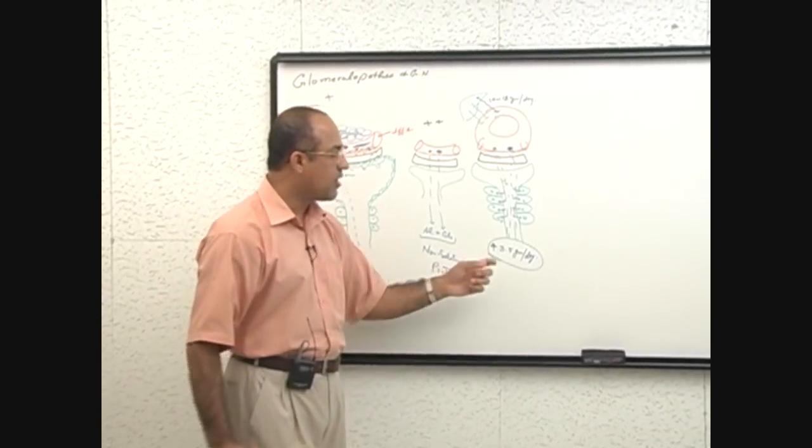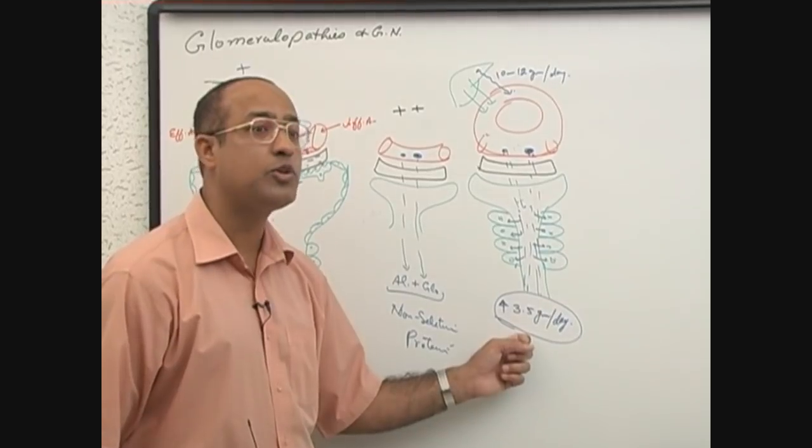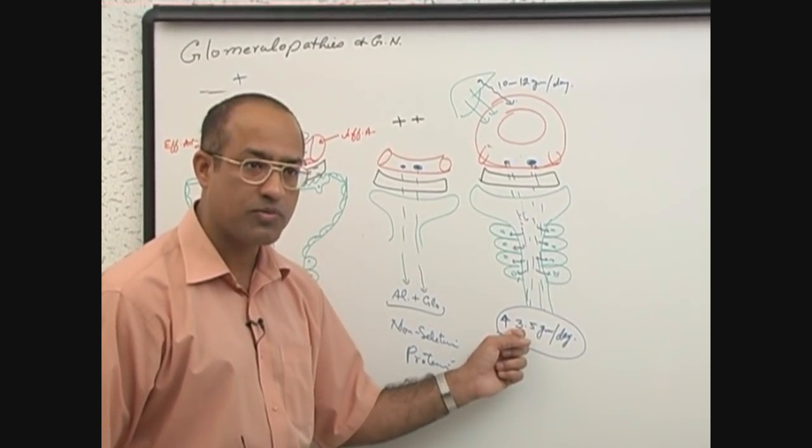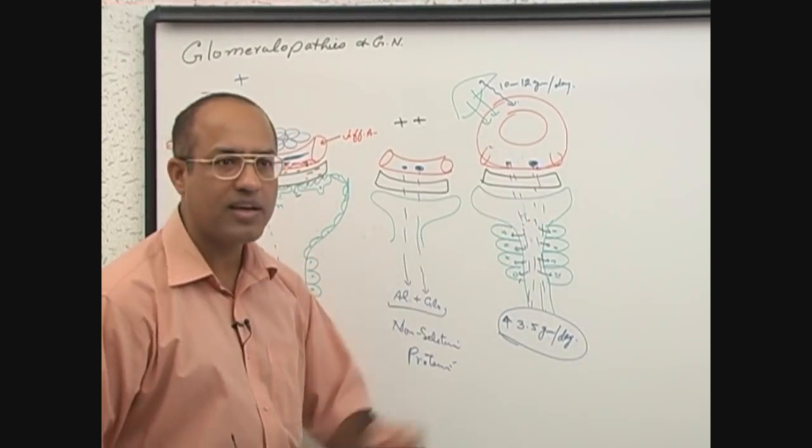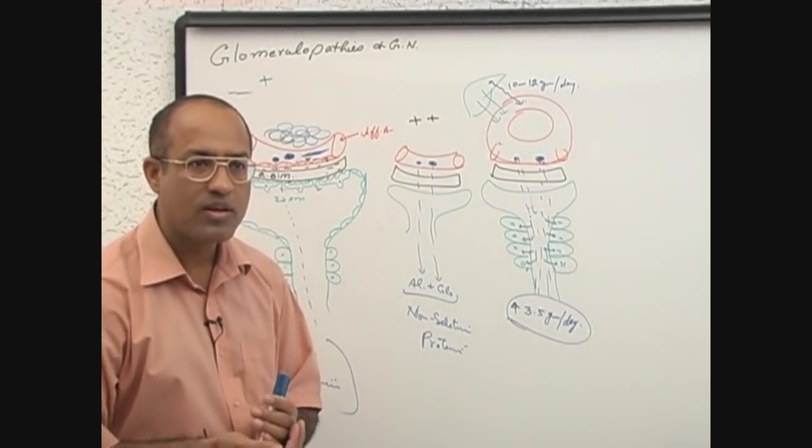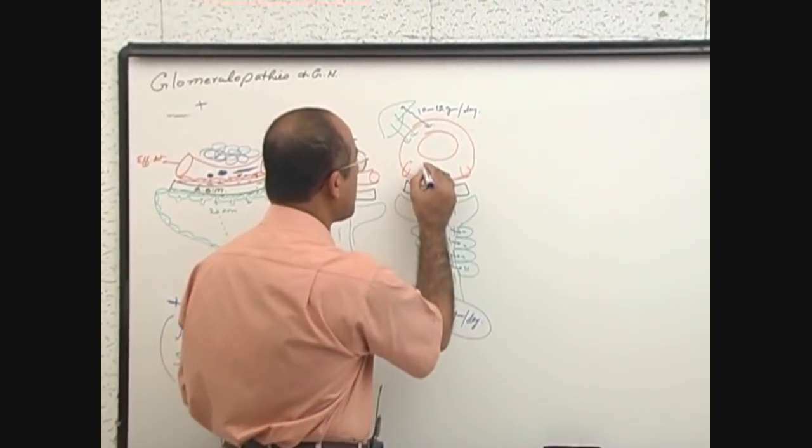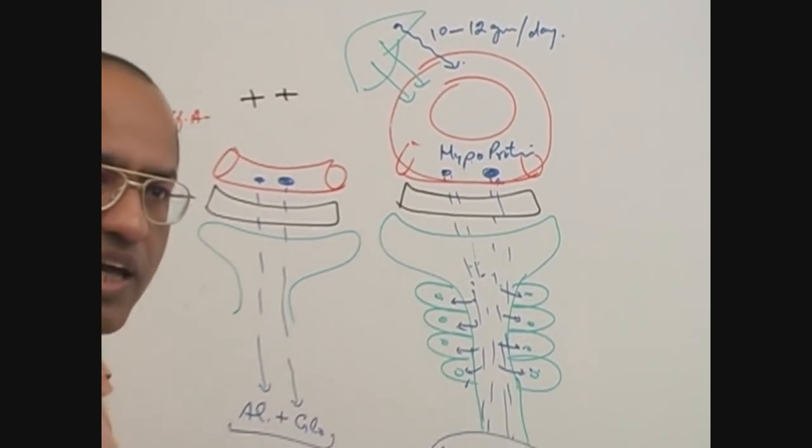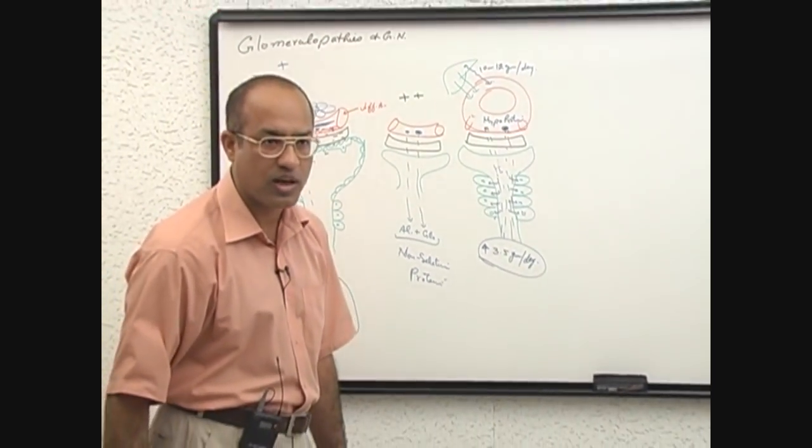What really happens? Once there is heavy proteinuria, heavy proteinuria is a term to be used when protein losses in the urine are more than 3.5 grams. When you have heavy proteinuria, then you start developing hypoalbuminemia. Of course, plasma proteins will be less, albumin will be less, and globulin will be less if it is non-selective protein losses.